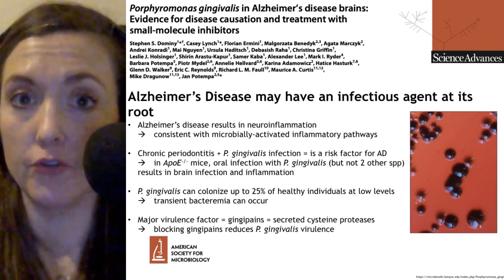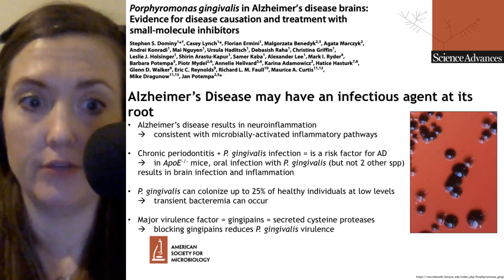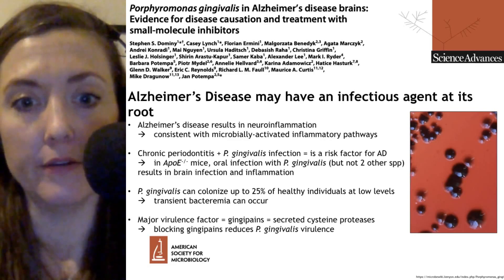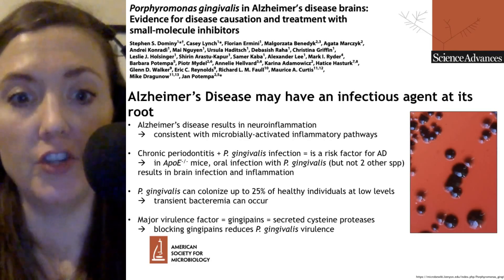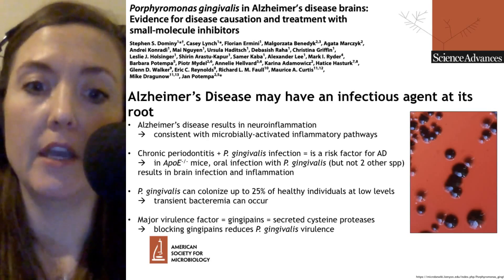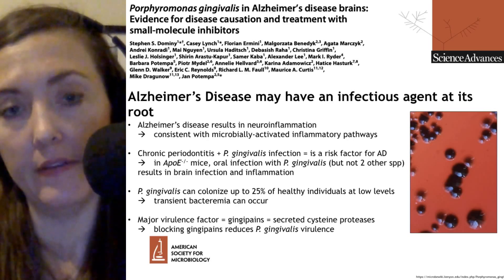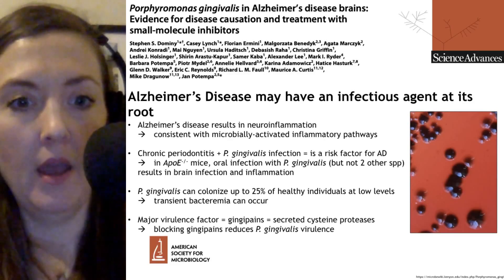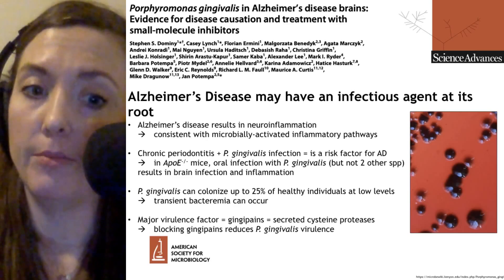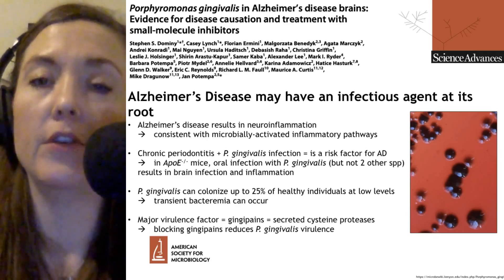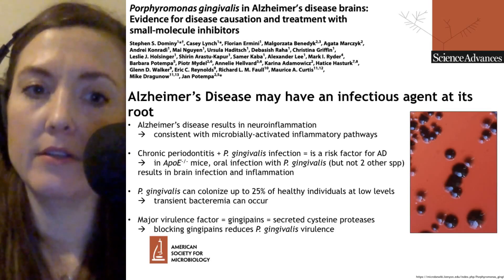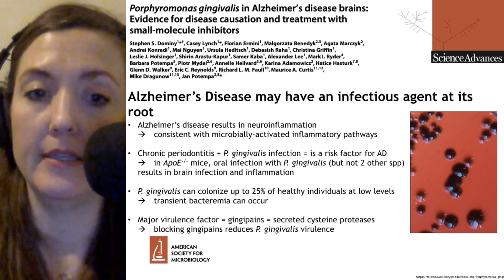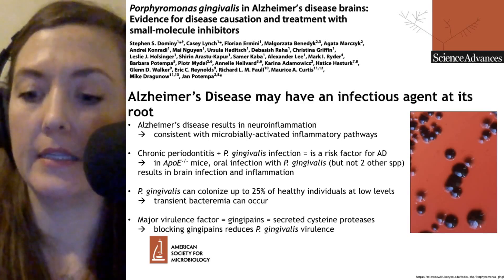This is not normally a cause for concern, but it is one way that P. gingivalis may transit from the oral cavity into the bloodstream. To cause disease, P. gingivalis has a number of virulence factors, but its major virulence factor is the gingipanes — a family of secreted cysteine proteases that can cleave different host proteins. Scientists have also shown that blocking gingipanes can reduce the virulence of this bacterium.